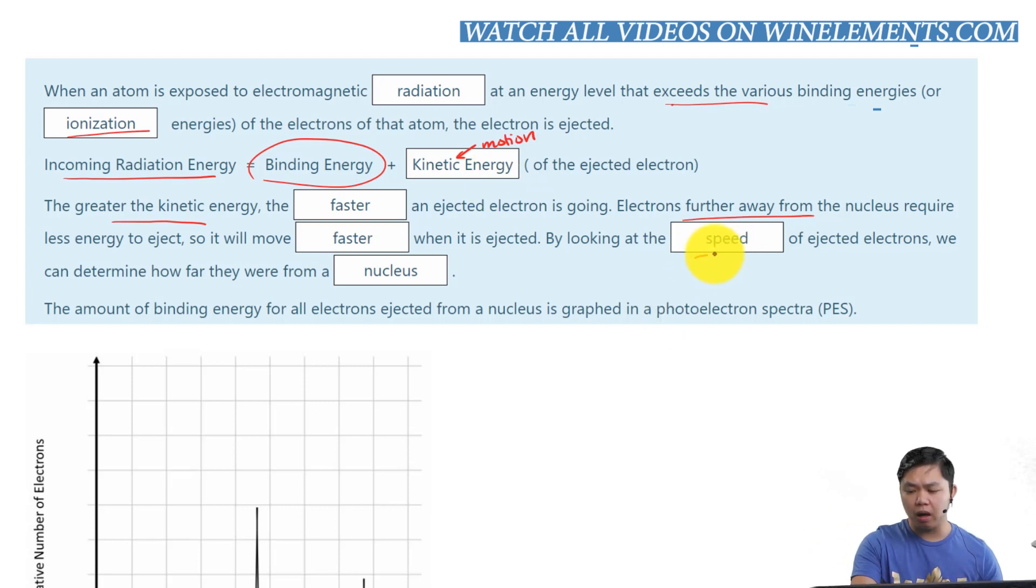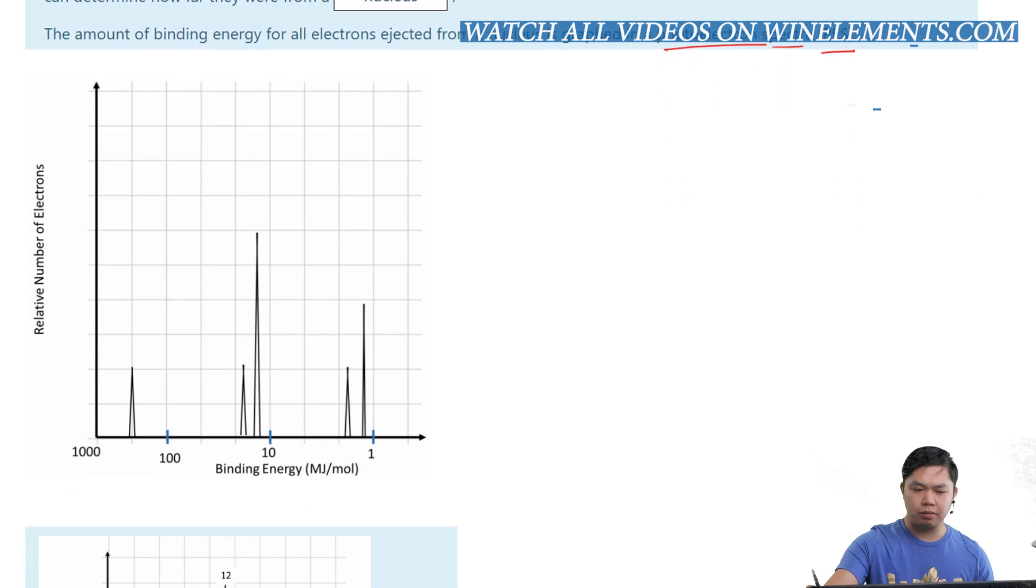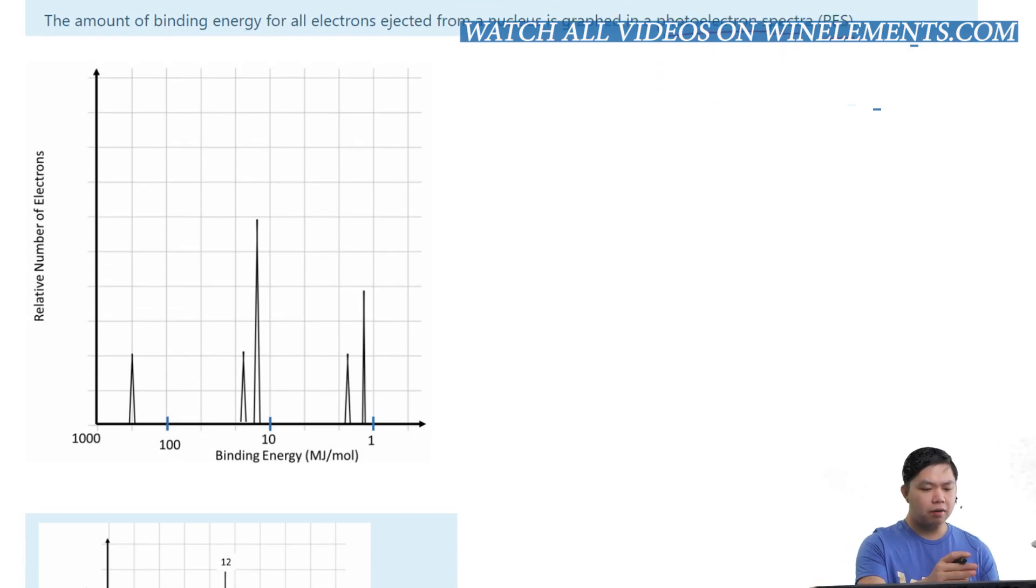So, by looking at the speed of the ejected electron, we can determine how far it is away from the nucleus. And this is demonstrated on a photoelectron spectrum, also known as PES. And now, let's look at this right here. We have this photoelectron spectrum, and here you can see the binding energy. Look what happened to the energy. It is decreasing as moving away from the origin. So, what does that tell you? This right here must be the closest to the nucleus.